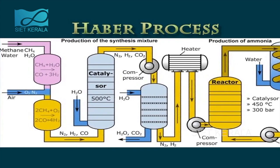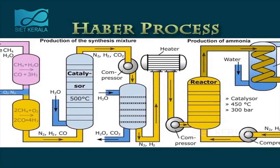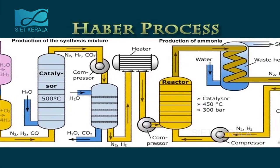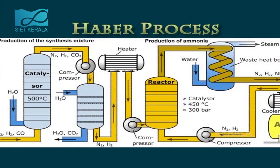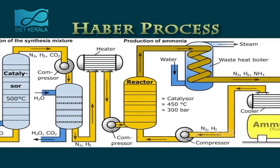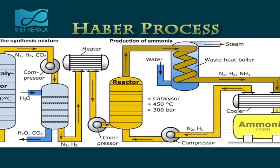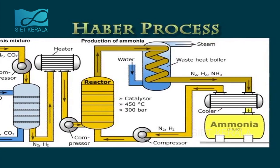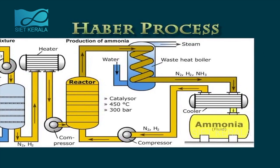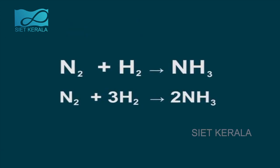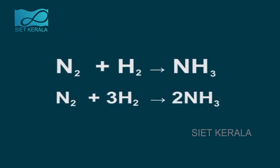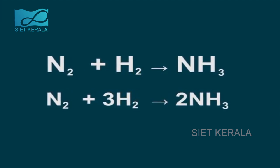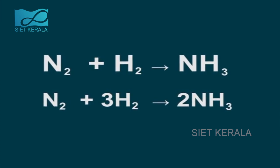Large-scale ammonia production is done through the Haber process. Ammonia is produced in the presence of iron catalyst by reacting nitrogen and hydrogen at high pressure and favorable temperature. N2 + 3H2 → 2NH3. This is known as the Haber process.